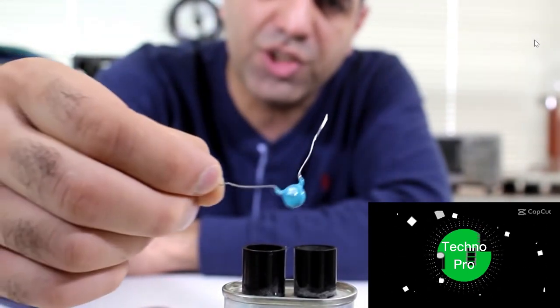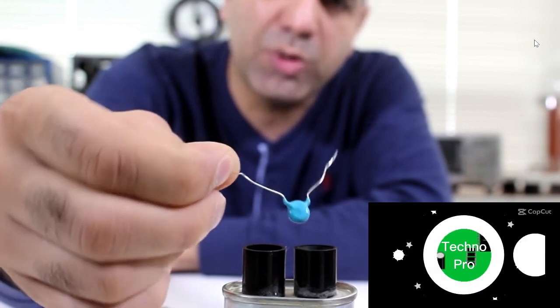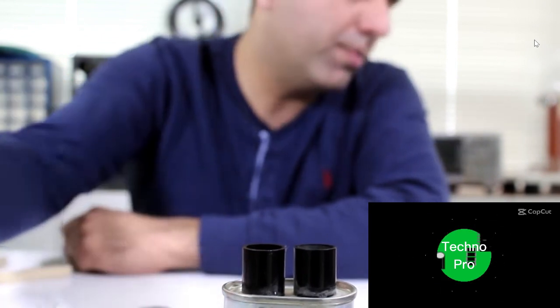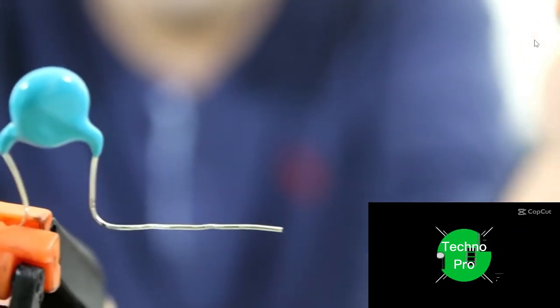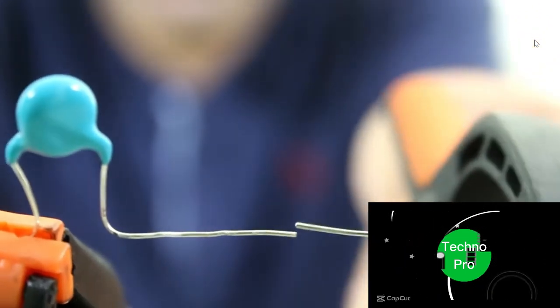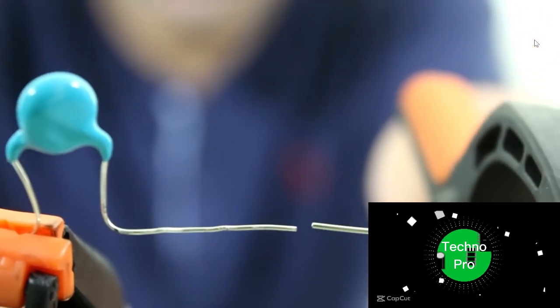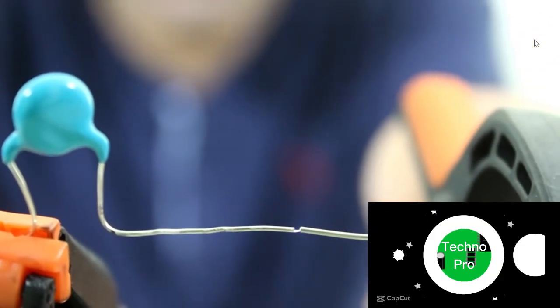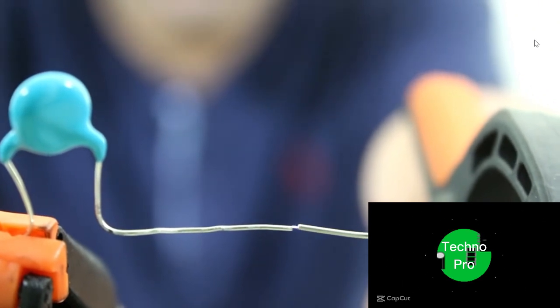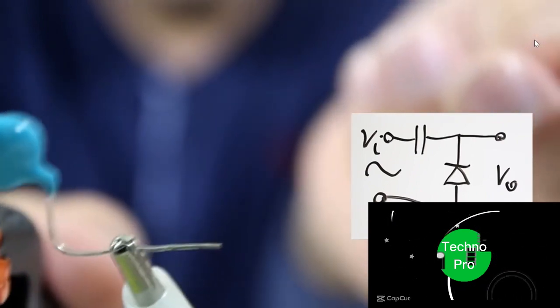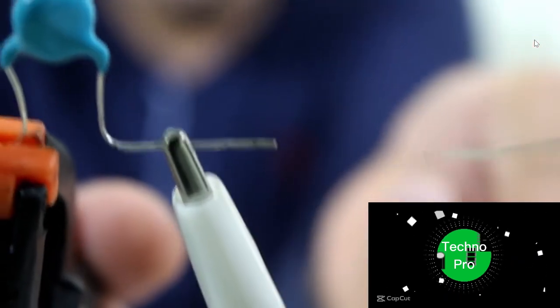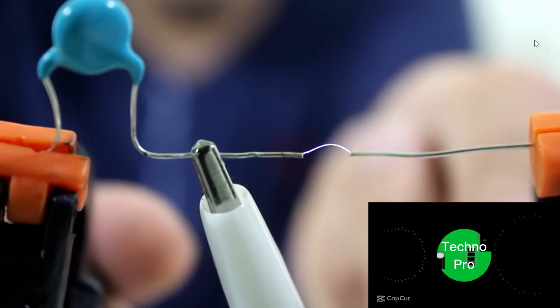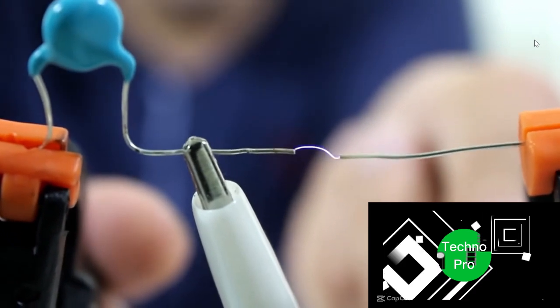And all I have are these hundred picofarad high voltage capacitors, which limit the output power a lot. Let me show you. Here I have a single capacitor in series with my power supply, and you can see that around one millimeter the arcs start jumping. Now all I did is that I added the diode I talked about earlier, and we can see that the arcs can jump from a much further distance.